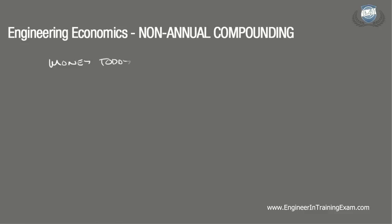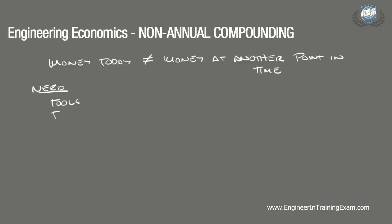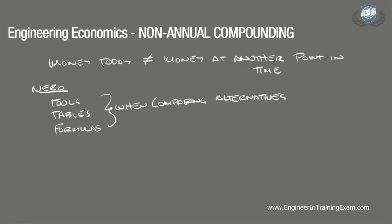It has been established in previous videos that money does not have the same value at different points in time. For this reason we need tools, tables, formulas, and various economic factors to reference when it is necessary to compare two complex alternatives. In our last video we dealt with continuous compounding, but up to that point in our studies we have dealt primarily with nominal interest rates expressed on an annual basis. Having this nominal rate as well as a defined period, we could quickly jump to referencing the appropriate economic formulas found in the table on page 114 and the compound interest table starting on page 116 of the NCEES Supplied Reference Manual to carry out the necessary analysis.